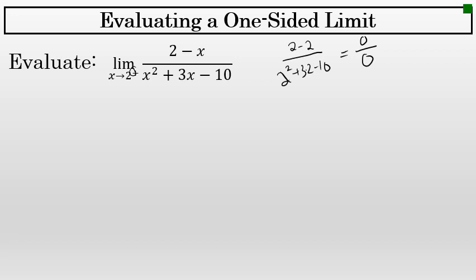So although it says the limit as x approaches 2 from the right, I can use the normal strategies used to evaluate a two-sided limit. In this case, it looks like factoring and simplifying could be used to evaluate this limit, so that's what I'll do.